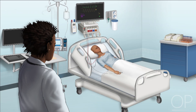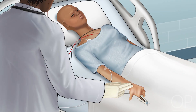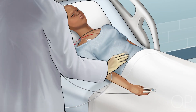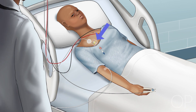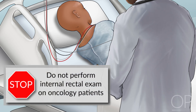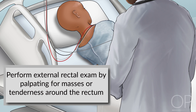Sites important to check on the physical exam will vary based on the patient's clinical symptoms and history, but should always include peripheral pulses and perfusion, heart, lungs, abdomen, all central line sites — keeping an eye out for erythema, tenderness, or discharge — and rectum. Just as oncology patients should never have rectal temperatures, we also never perform internal rectal exams. Instead, always perform an external rectal exam by palpating for masses or tenderness around the rectum.